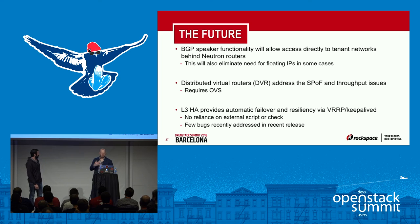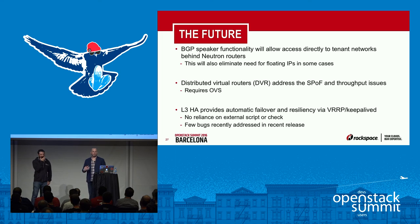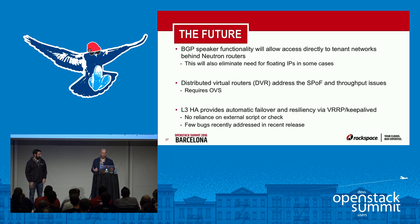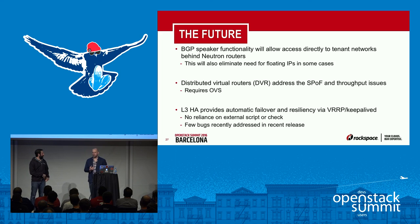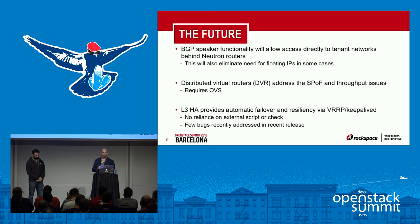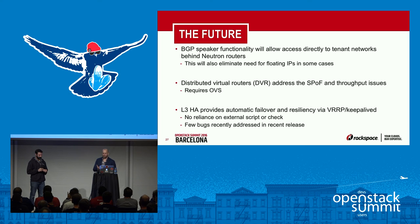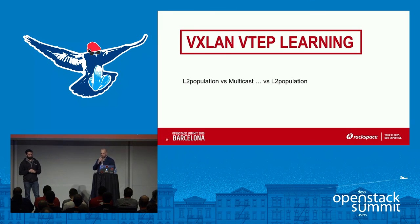Looking forward, BGP speaker functionality enables advertising tenant networks to external gateways without relying on static routing. DVR addresses the network bottleneck of the network node and allows compute nodes to forward traffic directly outbound. L3 HA provides router resiliency with significant increases in stability for HA routers.